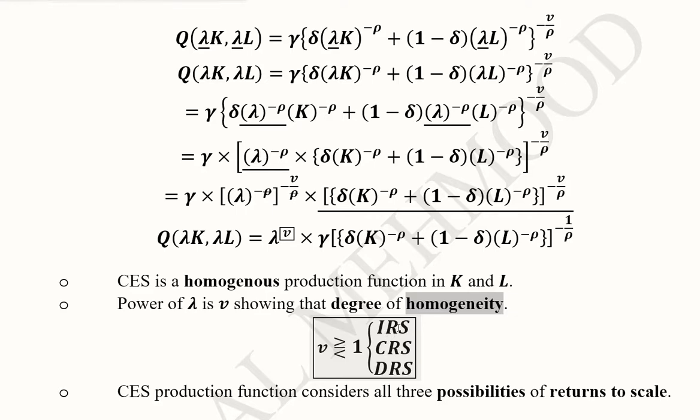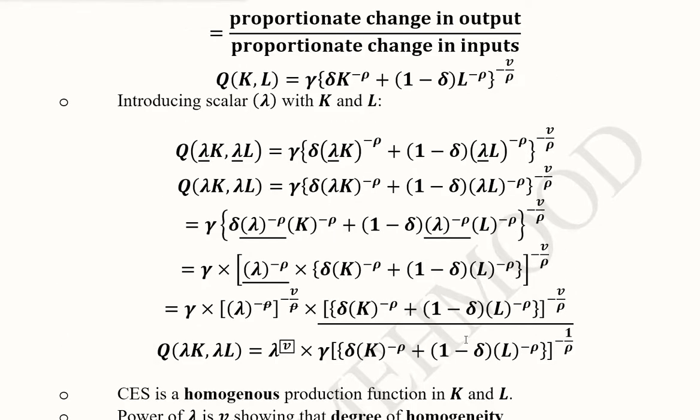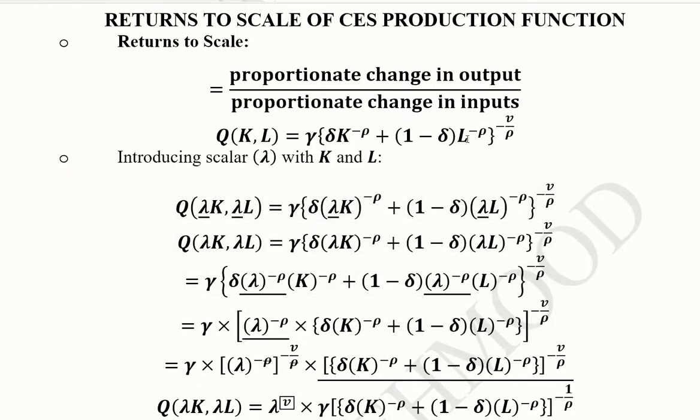If it is equal to 1, it means we have constant returns to scale. If it is greater than 1, we have increasing returns to scale. If it is less than 1, we have decreasing returns to scale. So CES production function can incorporate either of these possibilities of returns to scale. We just need to focus on this value. Whenever the production function is given, we can focus on this value.